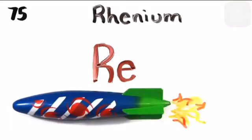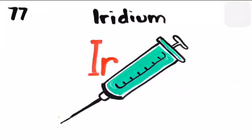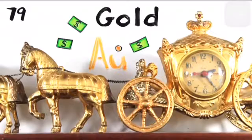Hafnium, tantalum, tungsten and then we're on to rhenium. Osmium and iridium, platinum, gold to make you rich till you grow old.